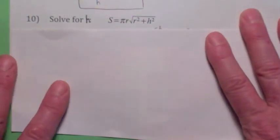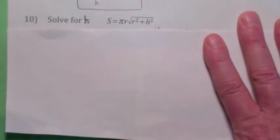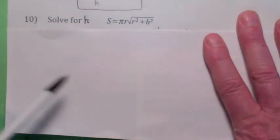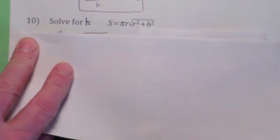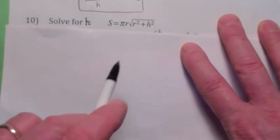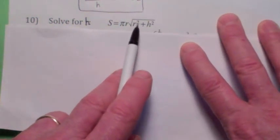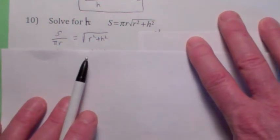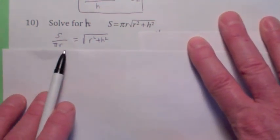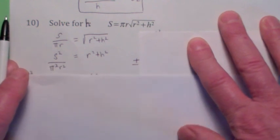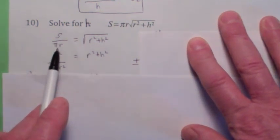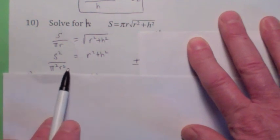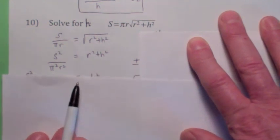Now the last one. This happens to be the surface area of a cone. Surface area in terms of the radius and the height of the cone. So let's solve for h. I'm going to have to square both sides to get rid of the square root. But let me first divide by pi r. Then I'm going to square both sides. And you end up with this. The square gets rid of the square root. And here you have s squared over pi squared r squared. Now to solve for h, I'm going to subtract r squared over.